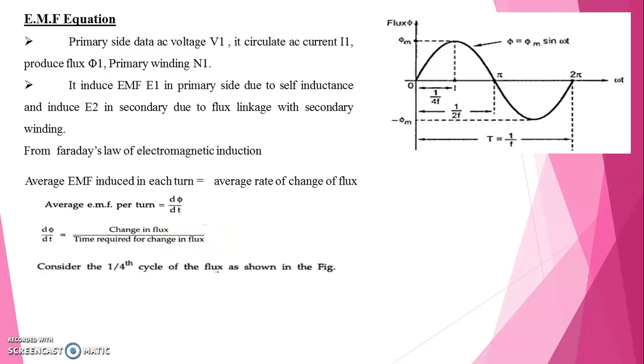So consider the 1 by 4th cycle of the flux. Complete cycle gets completed in 1 by f seconds. Hence 1 by 4th time. So here total time period T is equal to 1 by f. It is total time period for full cycle.